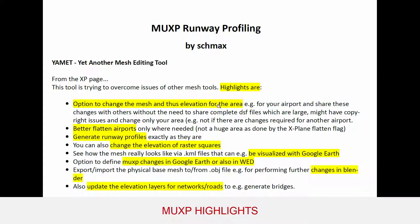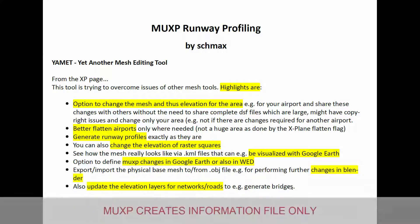The highlights are: options to change the mesh and thus elevation for the area; better flattened airports, not the huge areas done by the X-Plane flattened flag; generate runway profiles exactly as they are; you can also change the elevation of raster squares; export KML files so that you can visualise with Google Earth and do changes there; and import the physical base mesh from the object file for further changes in Blender. You can also update the elevation layers for networks to generate breaches.